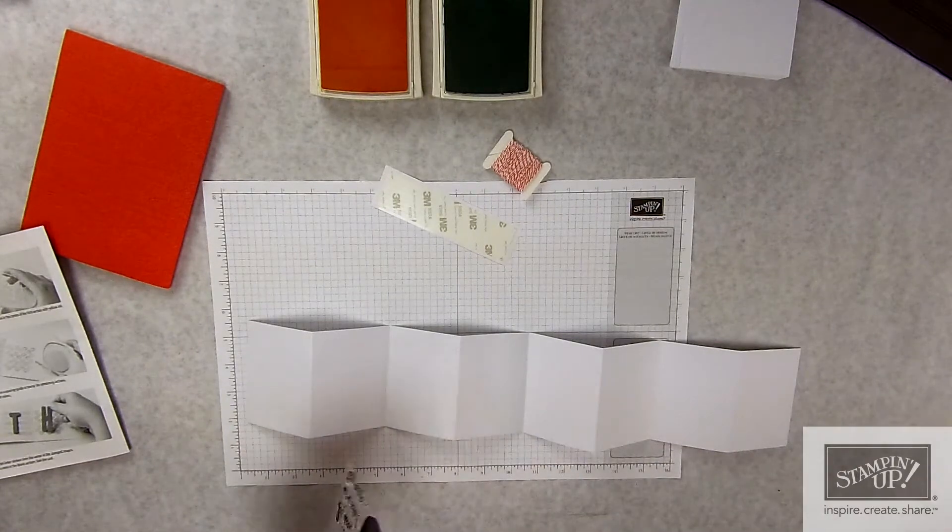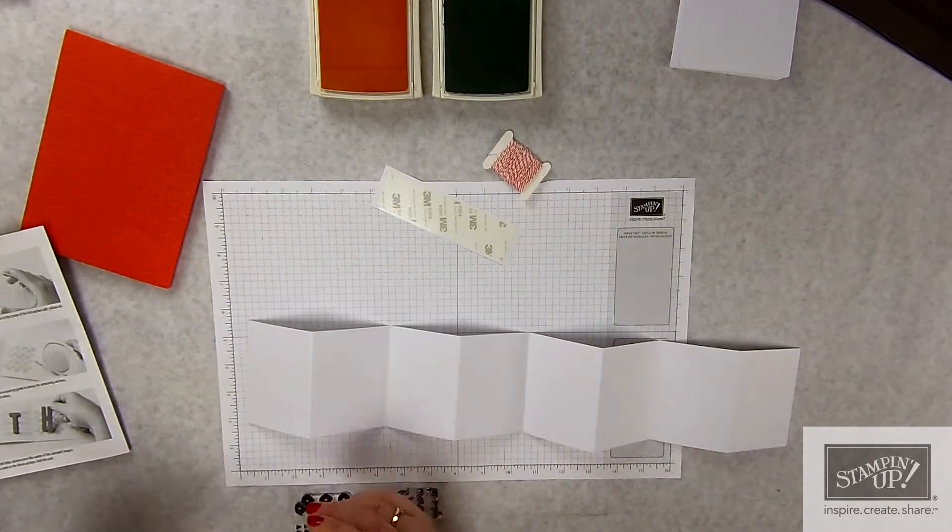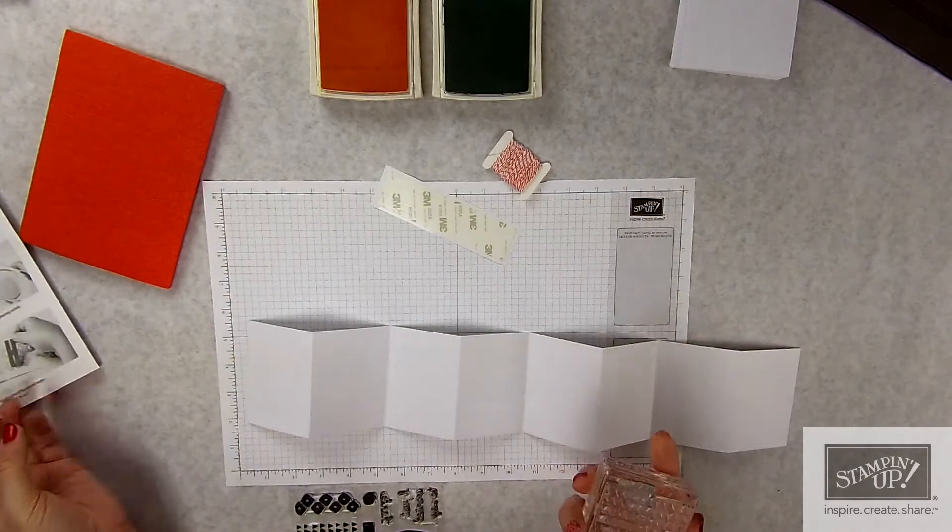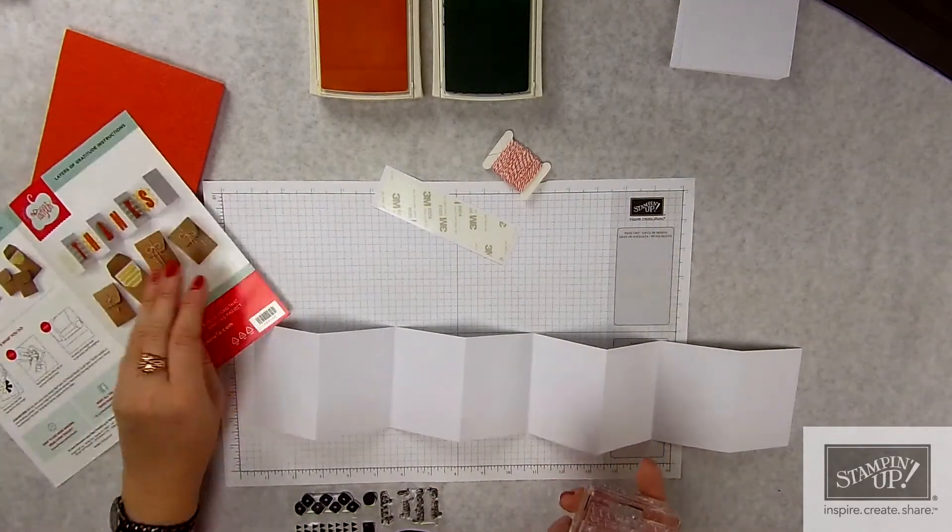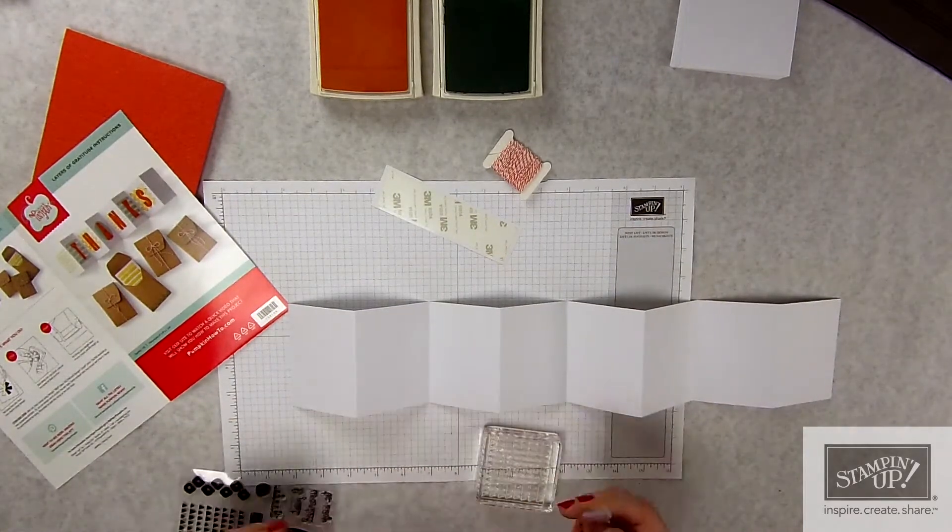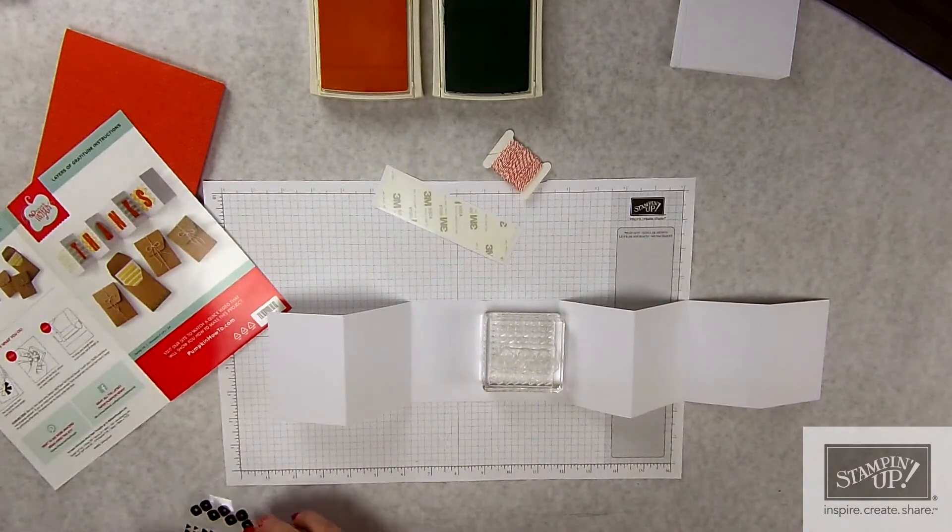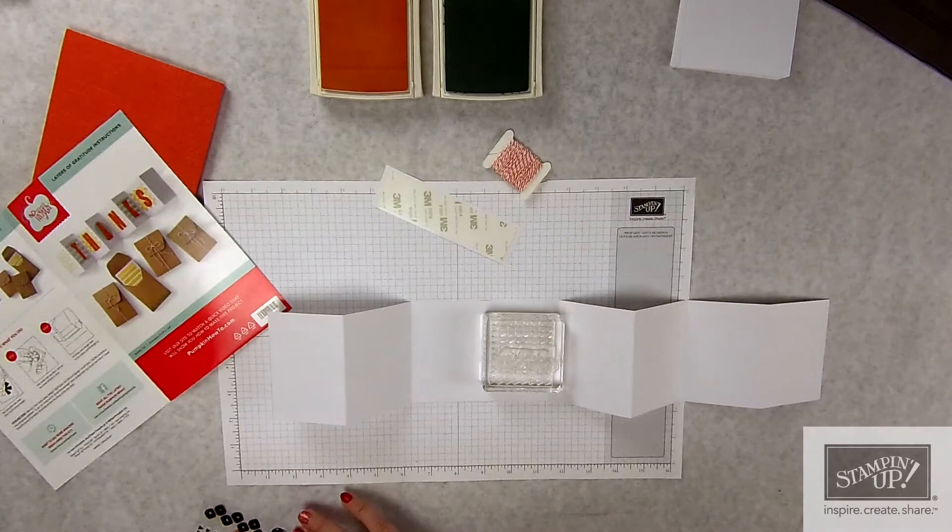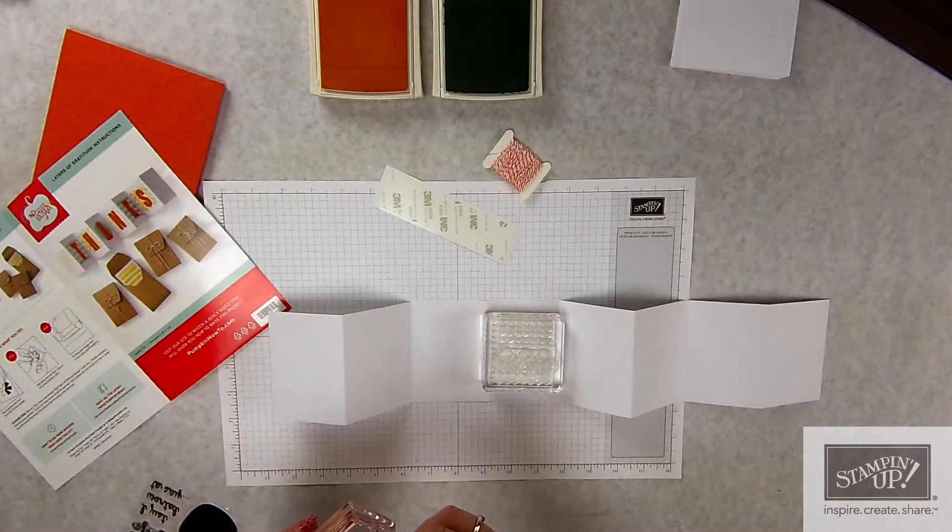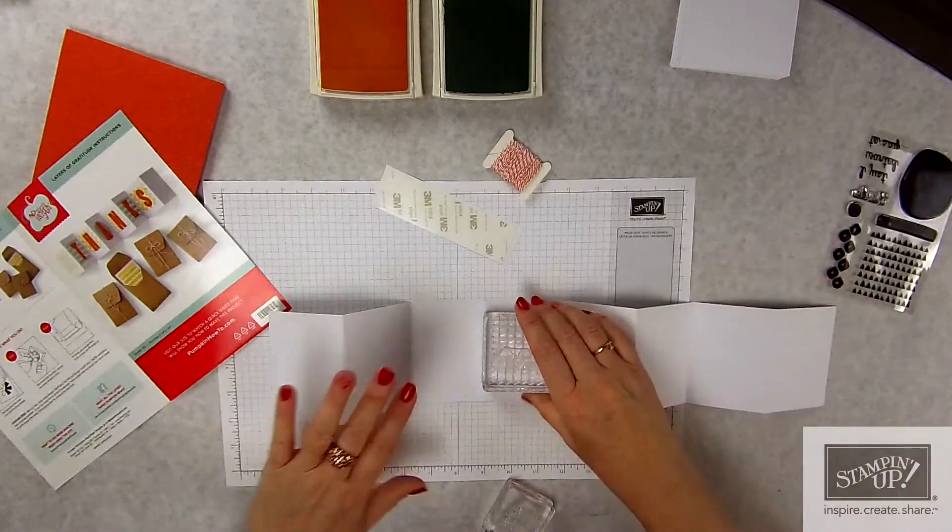So first off, we just get to stamp and have some fun. It looks like what they did was these little triangles and these little circles they did in Daffodil Delight. And then they stamped sentiment on top of that in Pool Party. And these two, they did in Pool Party.